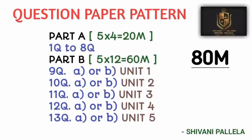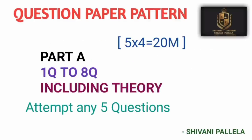For the question paper pattern: in Part A you need to attempt five questions out of eight, including theory and problems, for 20 marks total. Part B consists of 60 marks — five questions, each carrying 12 marks. For theory in Part B, a minimum of three pages is compulsory; for a short theory answer worth four marks, a minimum of one page is compulsory.